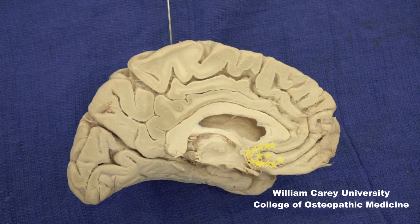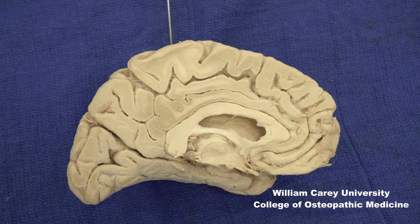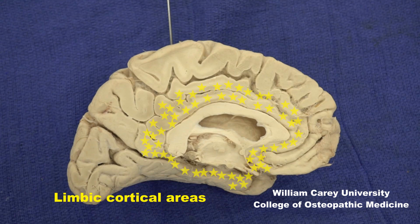This is the subcallosal area. For functional and clinical reasons, we may link this to the medial prefrontal cortex, but other descriptions will associate it with the larger concept of the limbic cortex, including the cingulate gyrus and parahippocampal gyrus, thus forming a complete ring around the corpus callosum.